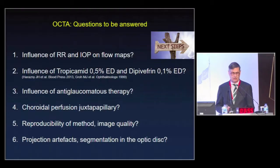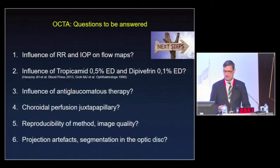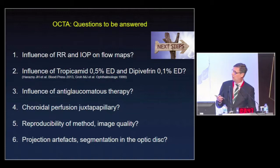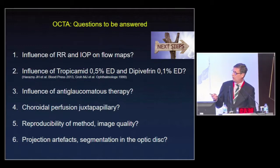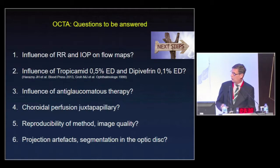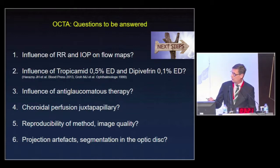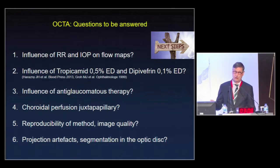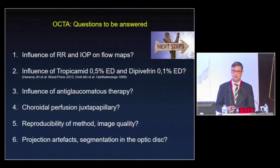When thinking about using OCT angiography in everyday glaucoma clinic work, we still need to solve several questions: the influence of blood pressure and intraocular pressure in diurnal variation on flow maps; the influence of pupil dilation; the influence of anti-glaucomatous therapy including beta blockers, carboanhydrase inhibitors; how choroidal perfusion changes juxtapapillary; reproducibility of the method; image quality; projection artifacts from large retinal vessels in the papillary area; and segmentation issues in the optic disc. Concerning OCT angiography and glaucoma, we still have a lot of work and research to do.